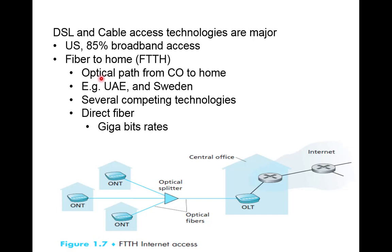In FTTH, a fiber optic path is deployed from the central office all the way to the home. This technology is used in countries like UAE and Sweden. Competing approaches include direct fiber from the central office to each home, or a shared architecture where a single fiber runs from the central office (with an OLT device) to a junction point.